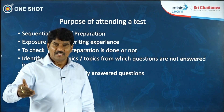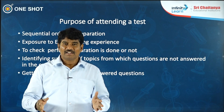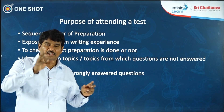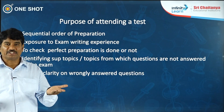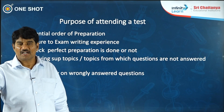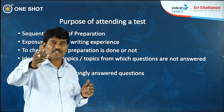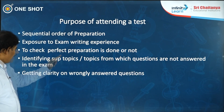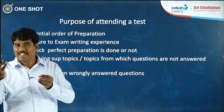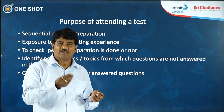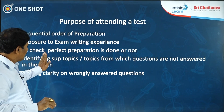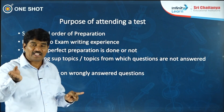Once a test is done, you need to check whether your preparation for that particular test was perfect or not — based on the number of questions answered right and wrong, you can assess yourself. The third point is identifying the topics or subtopics in a chapter from which you have not answered questions correctly. If in any subtopic two or three questions are wrong, it means you may not have good clarity on that particular topic or subtopic, and you will know this only after the examination is done.